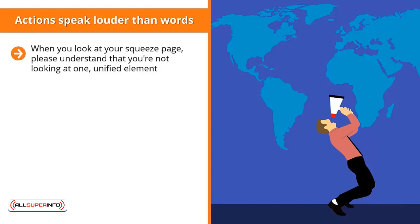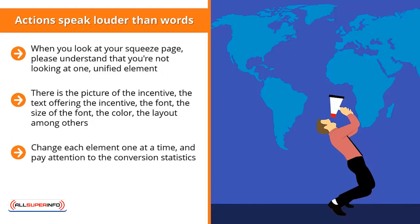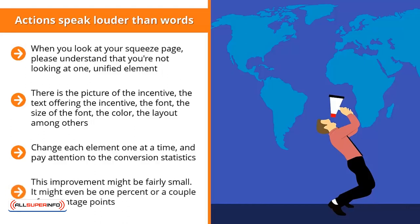When you look at your squeeze page, understand that you're not looking at one unified element — it's actually made up of many different parts: the picture of the incentive, the text offering the incentive, the font, the size of the font, the color, the layout, among others. Change each element one at a time and pay attention to the conversion statistics. Make many different variations and test them against your traffic. You should quickly see that at least one variation has a higher conversion rate than others — even if the improvement is just one or a couple of percentage points.